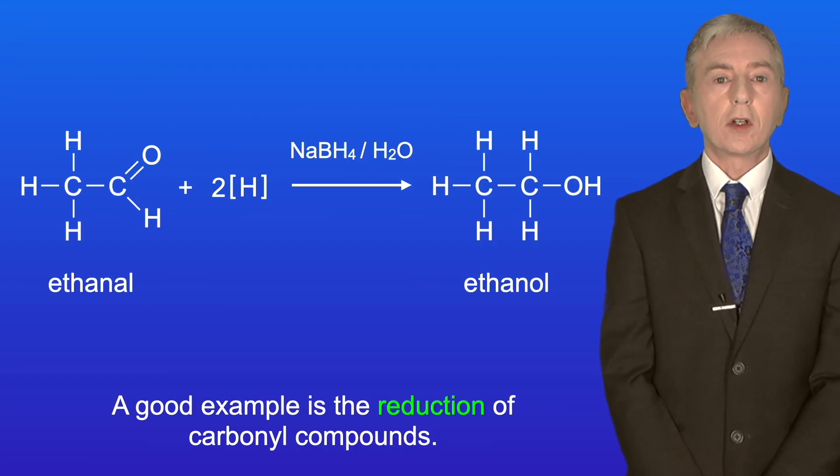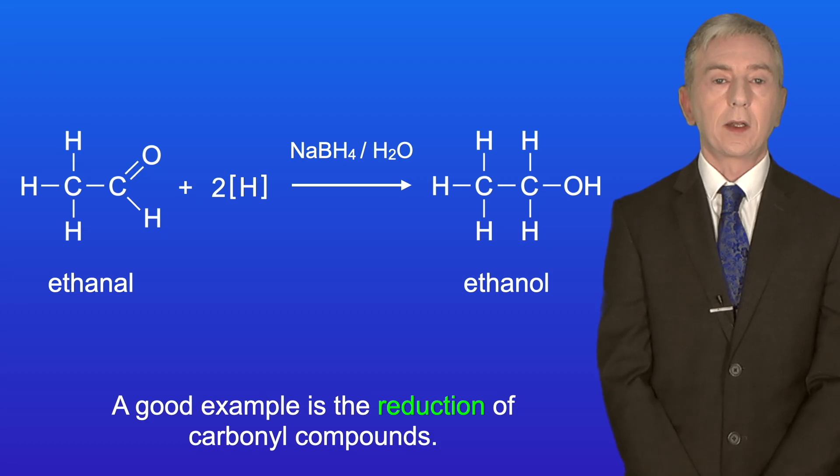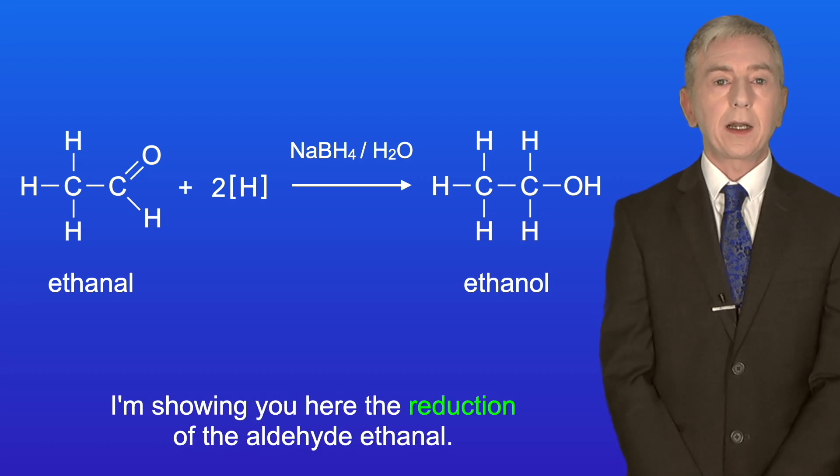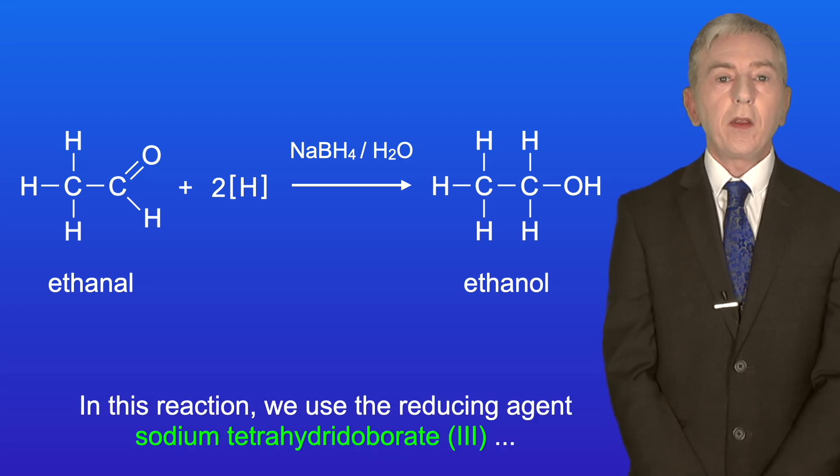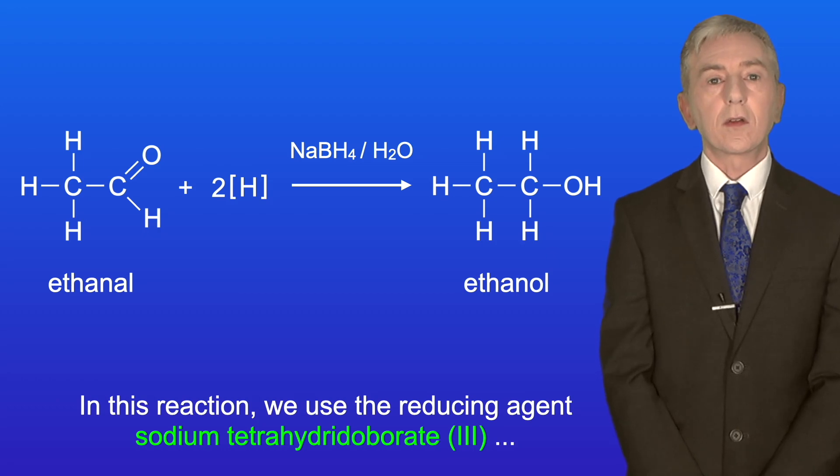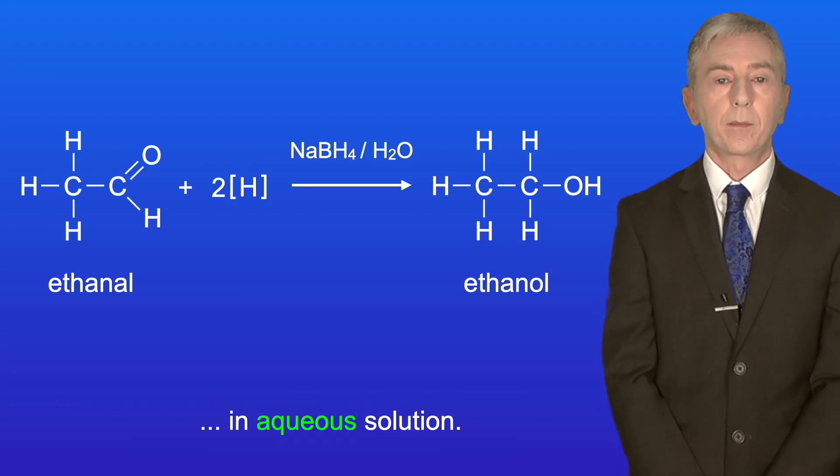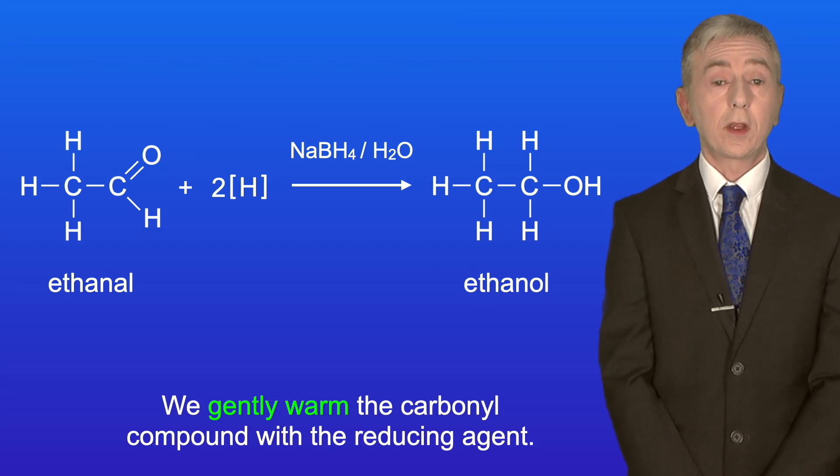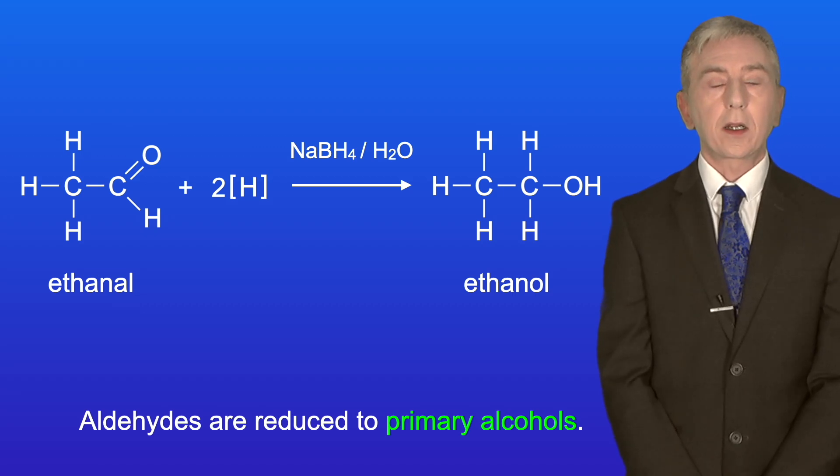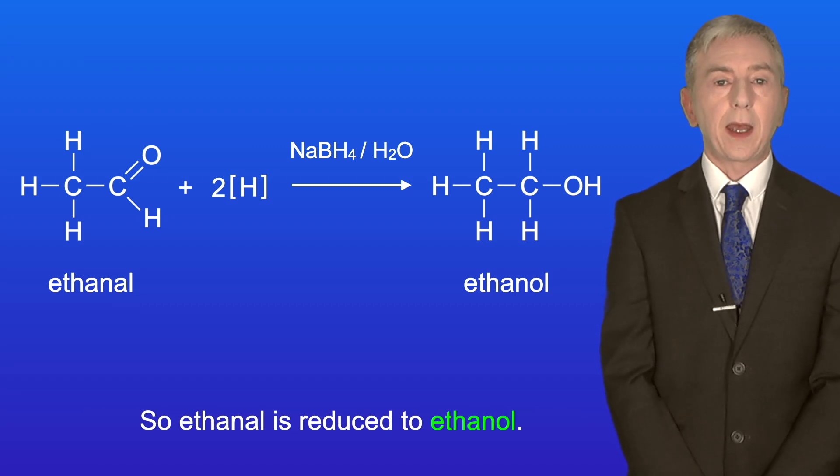A good example is the reduction of carbonyl compounds. I'm showing you here the reduction of the aldehyde ethanal. In this reaction we use the reducing agent sodium tetrahydridoborate in aqueous solution, and we gently warm the carbonyl compound with the reducing agent. Aldehydes are reduced to primary alcohols, so ethanal is reduced to ethanol.